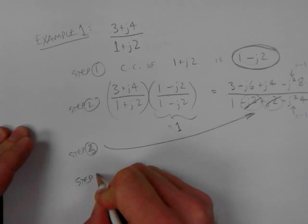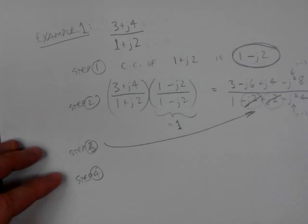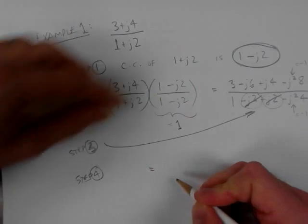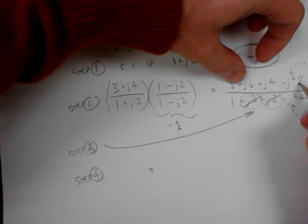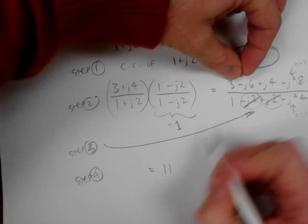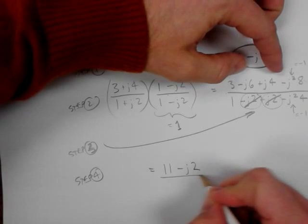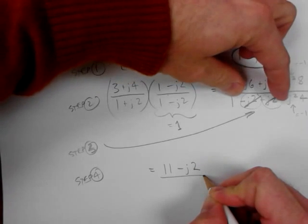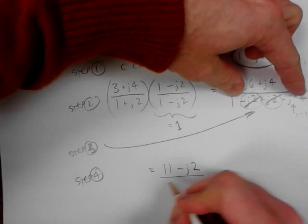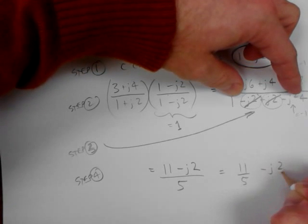That brings us to step four: simplify. This is equal to 3 plus 8, which is 11. Then minus j6 plus j4 is minus j2. Over 1 minus negative 4, which is 1 plus 4 equals 5. So that's eleven over five minus j2 over five.